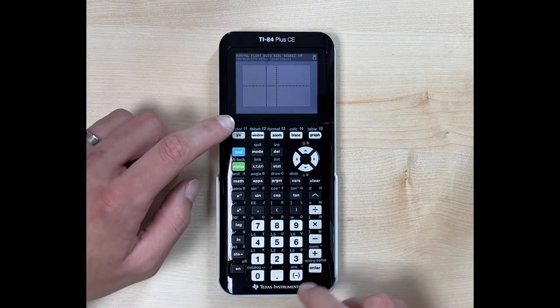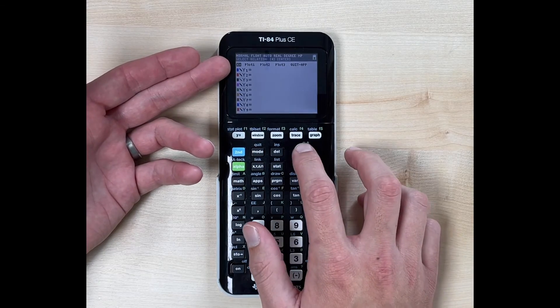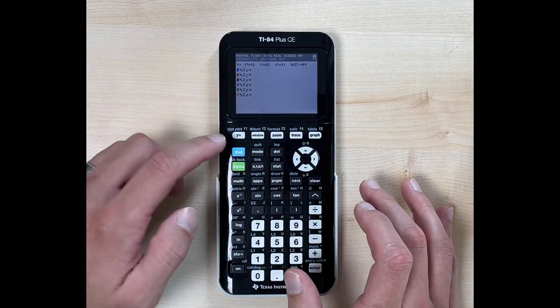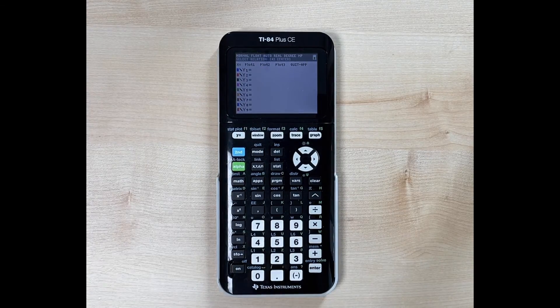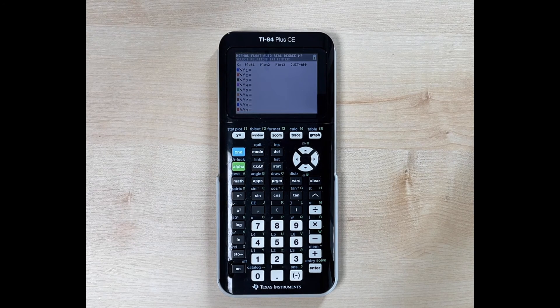So remember to go out of that. If I hit y equals, notice my x equals is highlighted. Go back up, hit enter, hit clear. Now we're back to y equals. And that's how you graph a vertical line on the TI-84 plus CE graphing calculator.